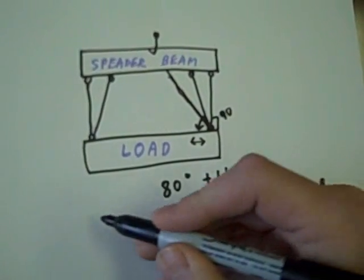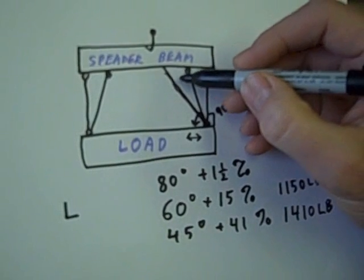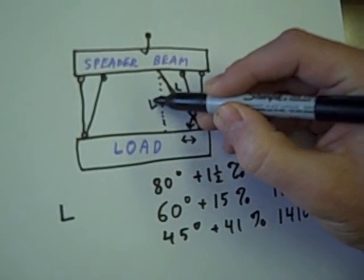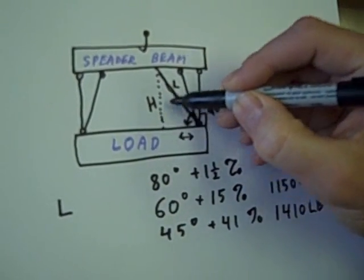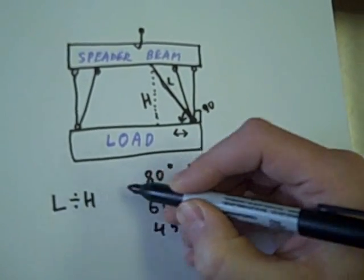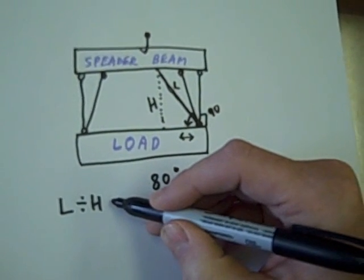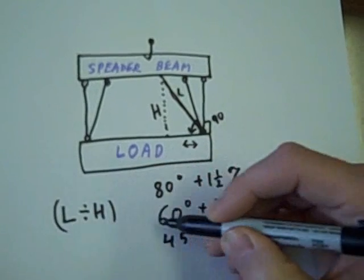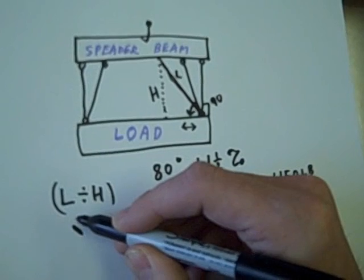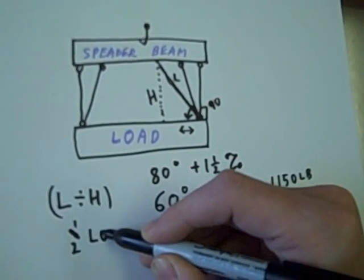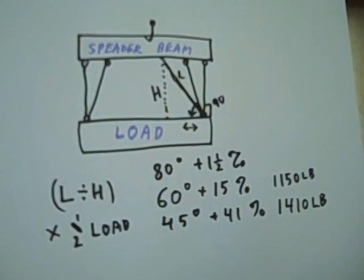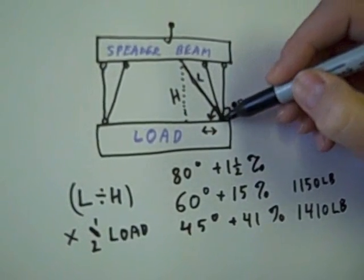If you remember we called that L, and then we needed to know the height above the load that the beam was. So we took L and we divided it by H, and then we multiplied that answer times one-half the load weight. That would equal the total amount of force in that sling itself.